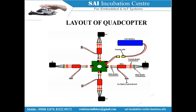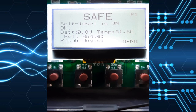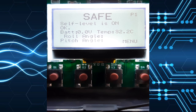Now I'll show some basic configuration settings on the KK 2.1 board. When you turn it on, it will show either 'safe' or an error. One common reason for an error is that the RF receiver connected to the KK 2.1 and the RF transmitter must be linked together before powering on. Please remember this important point when setting up the board.